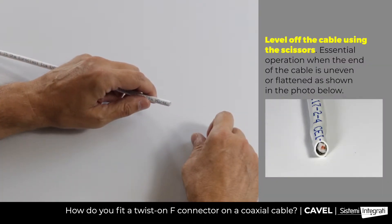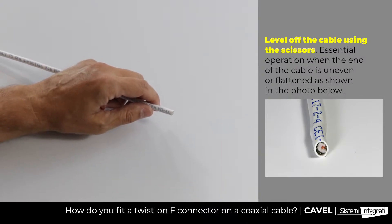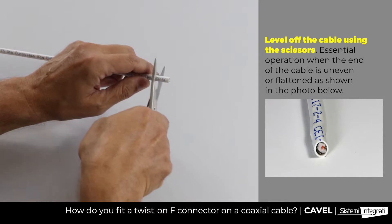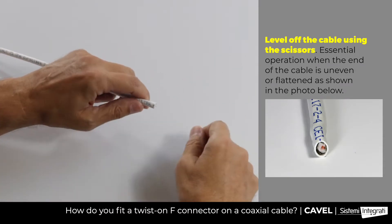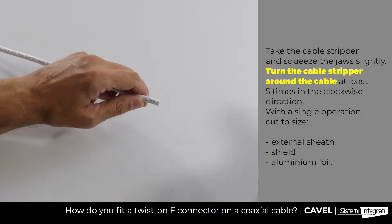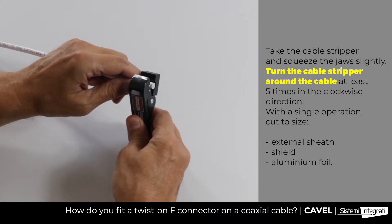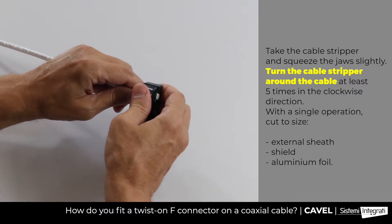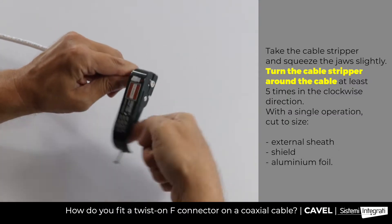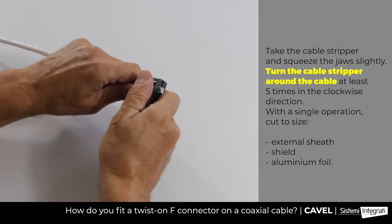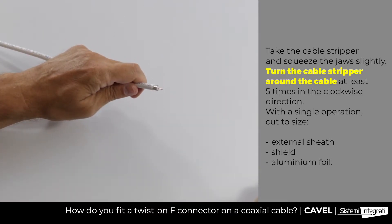To fit the FA703 twist-on connector on the cable, first of all, level off the cable using the Cavel scissors. Then take the CS00 cable stripper and use it onto the cable like this. Squeeze the jaw slightly and turn the cable stripper 5 or 6 times. And while keeping the jaw squeezed, remove the sheath from the cable.